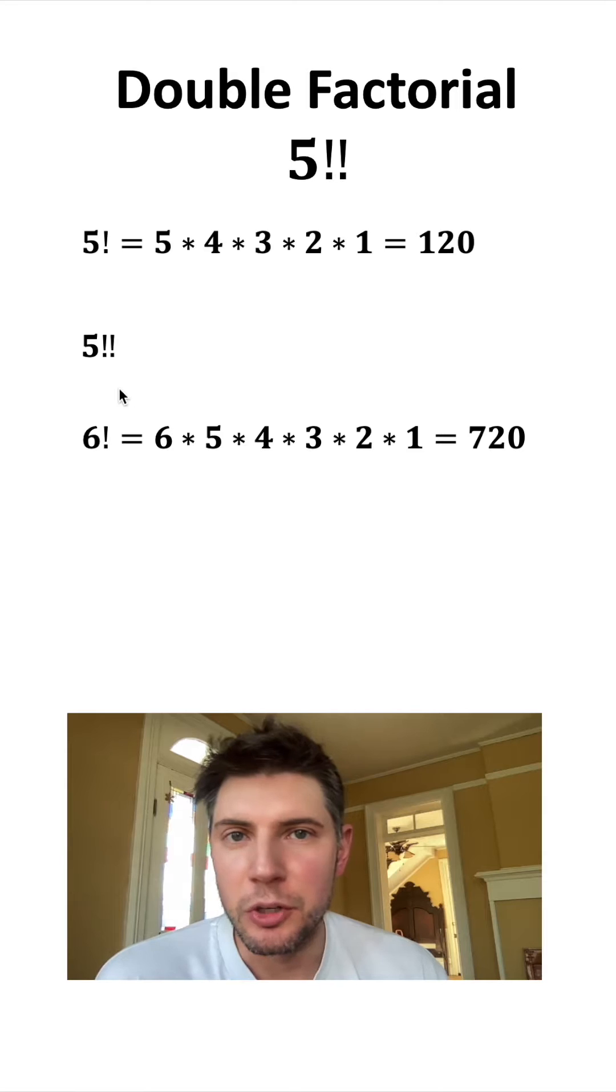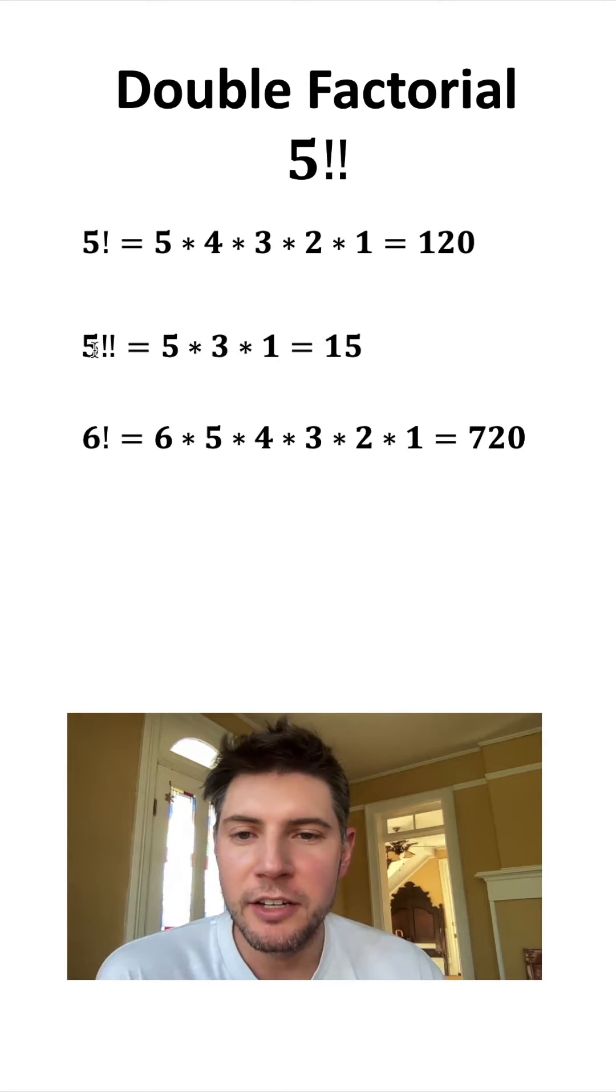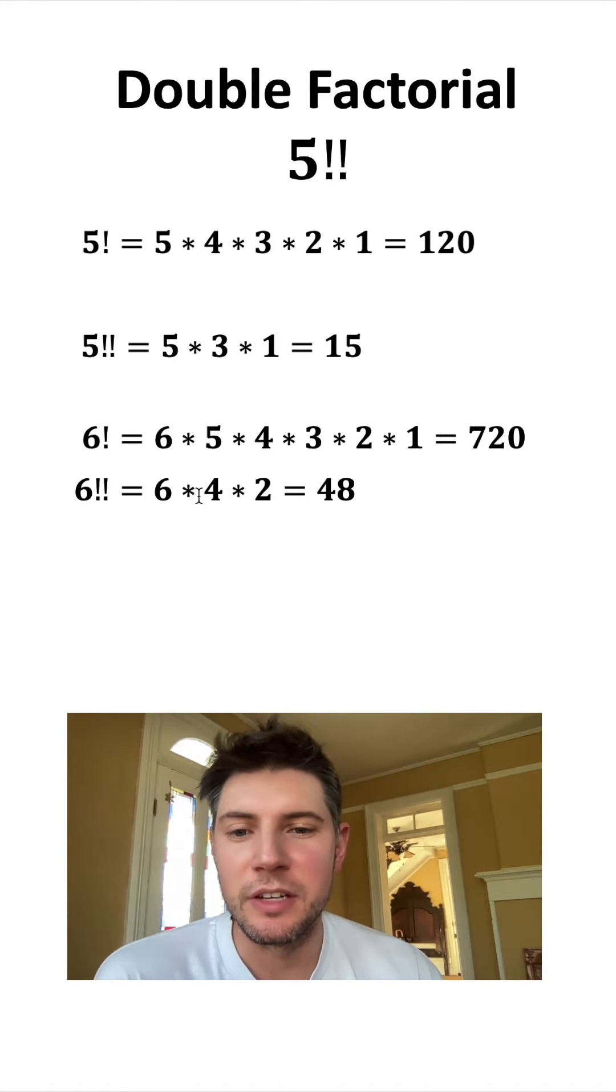The way it works if you have two exclamation marks is if it's odd, you do all the odd numbers going down to 1. So 5 double factorial would be 15. And if it's even, you do all the even numbers going down and then you stop at 2.